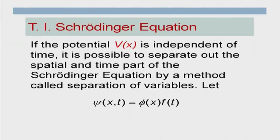When potential energy is not an explicit function of time, this equation can be written in a slightly different form, which we call the time-independent Schrödinger equation. In this course we will be using the time-independent Schrödinger equation more than the time-dependent equation. To obtain it, we use the method of separation of variables — a very standard mathematical method.